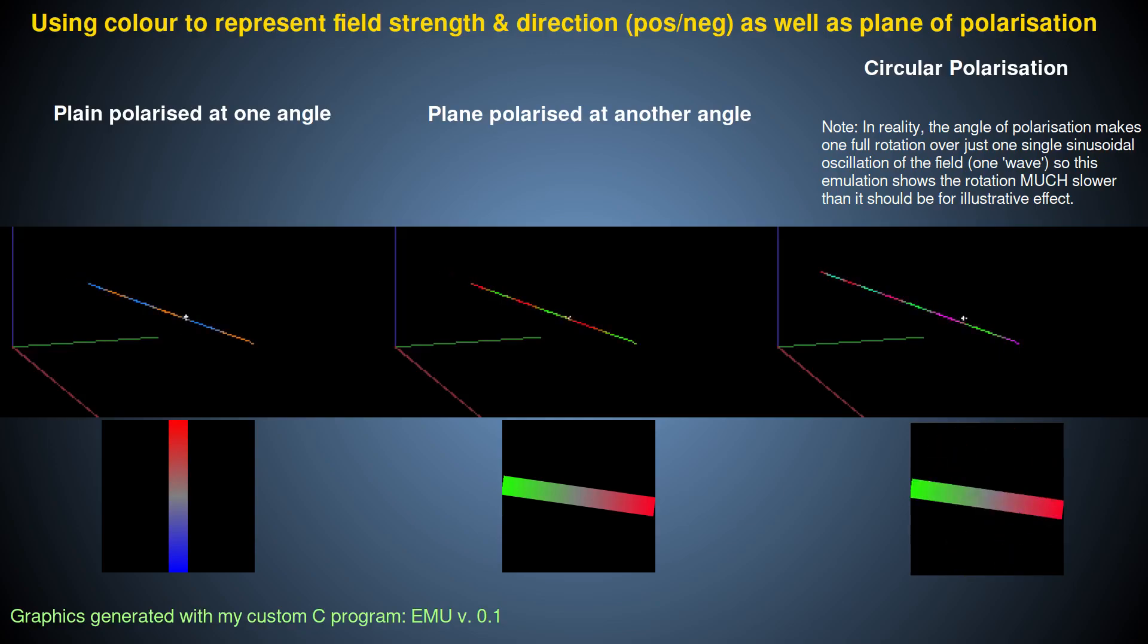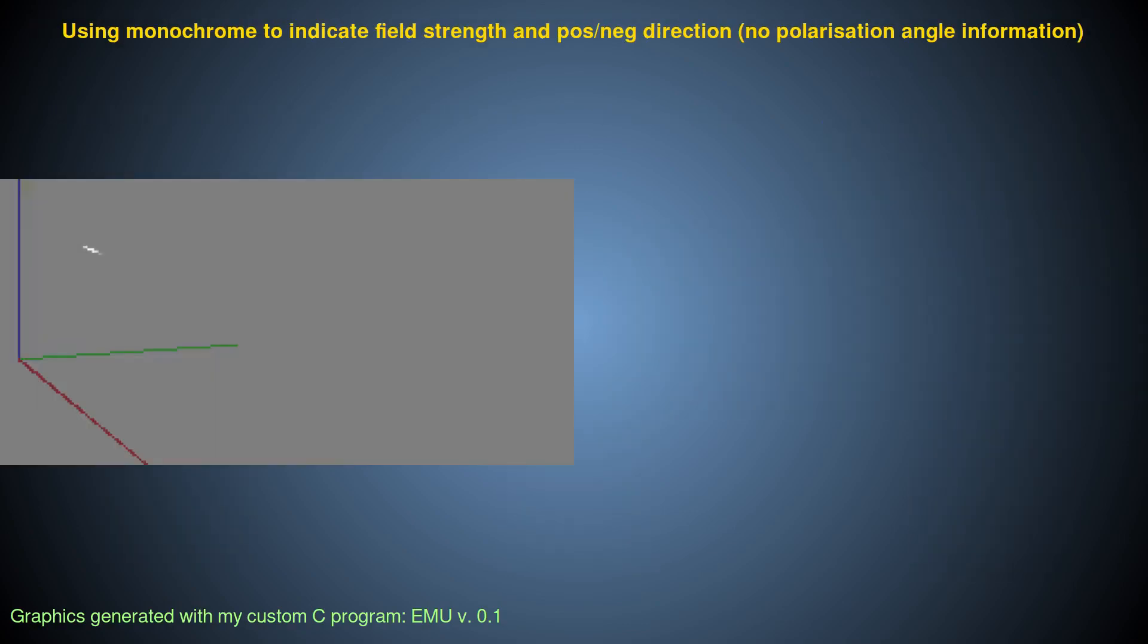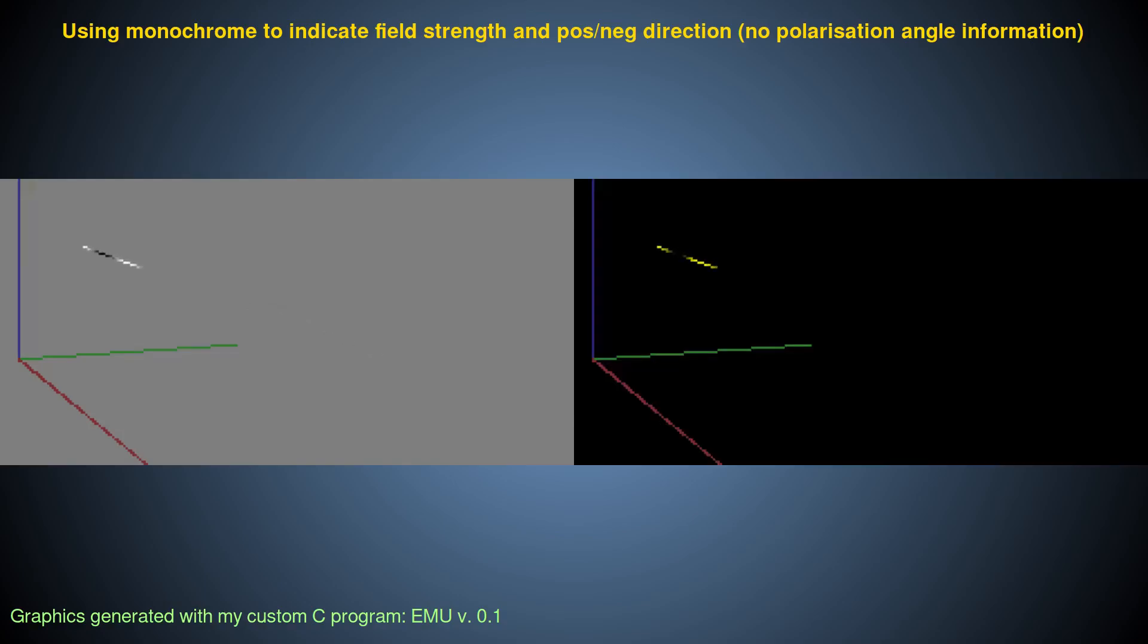The different polarization states will manifest as different directions of force felt by a charged object caught in the path of the ray. Now, if we don't need to illustrate polarization, we can simply use shades of gray to represent the undulating field vector, like this, or shades of a single color, like this.